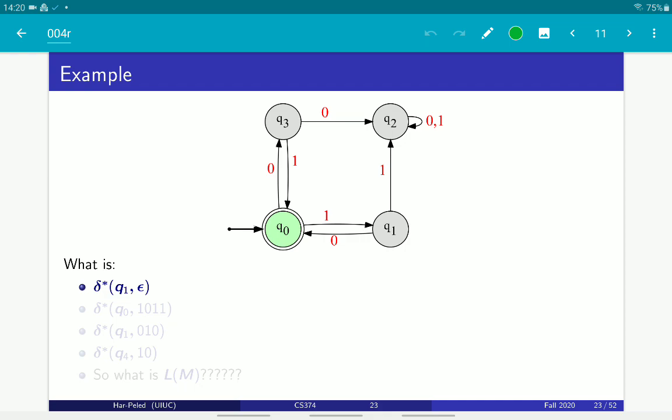So let's revisit an example we already seen. Why Q0 is green in this diagram is a mystery. So, delta star of Q1 of epsilon, we are at Q1 and we accept the empty string. So, of course, the empty transition is we stay where we are. So, this is Q1.